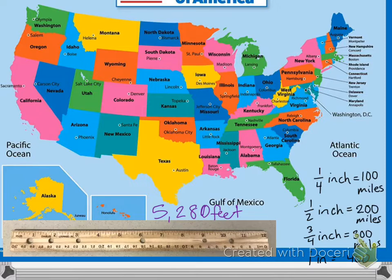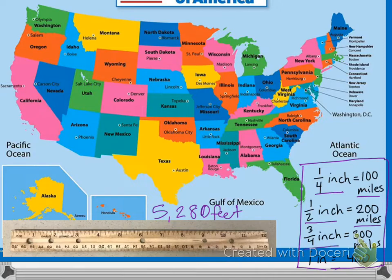On a map, there's always a box that shows a scale. This one is telling us that a quarter of an inch equals 100 miles, a half an inch is 200 miles, three-fourths of an inch is 300 miles, and one inch equals 400 miles.